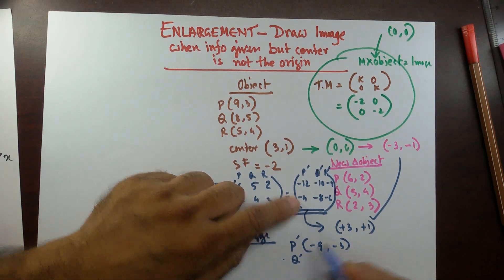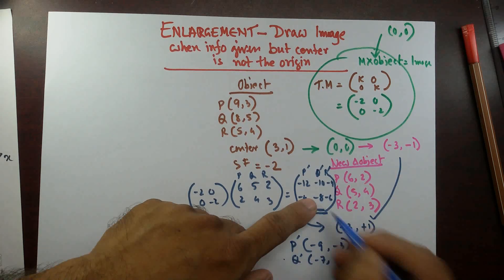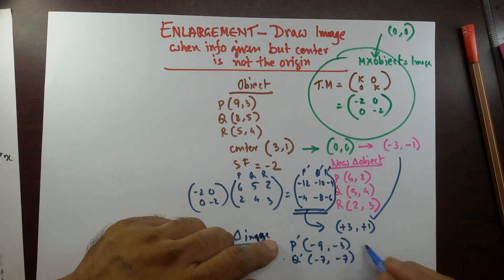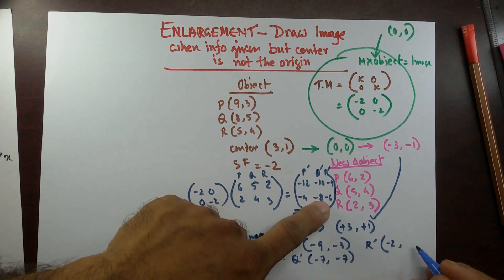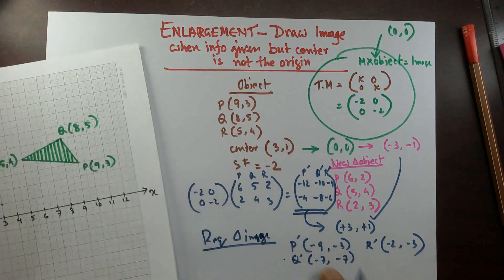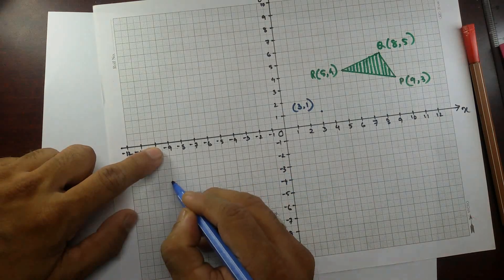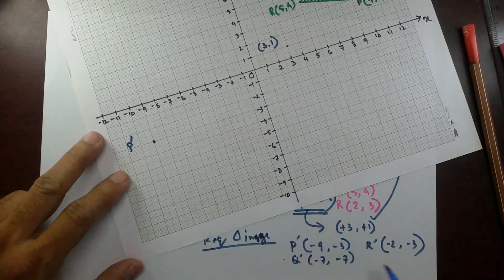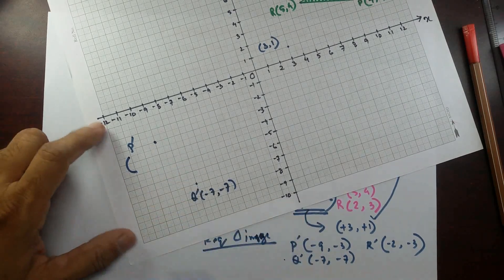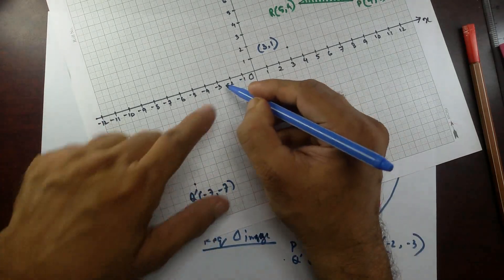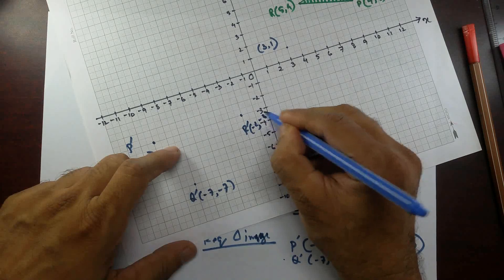For Q', that's the required one: −10+3 = −7 and −8+1 = −7, giving Q'(−7, −7). For R', the coordinates are: −4+3 = −1 and −6+1 = −5, giving R'(−1, −5). So P' is at (−9,−3), Q' is at (−7,−7), and R' is at (−2,−3) — wait, let me correct that.